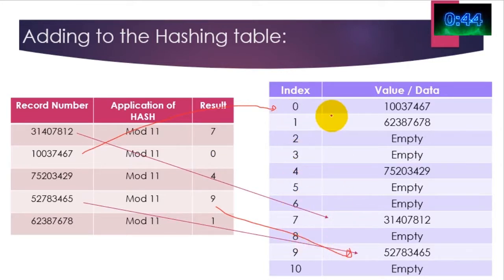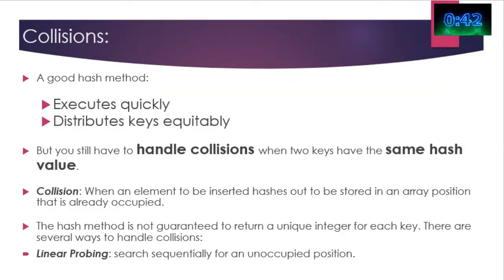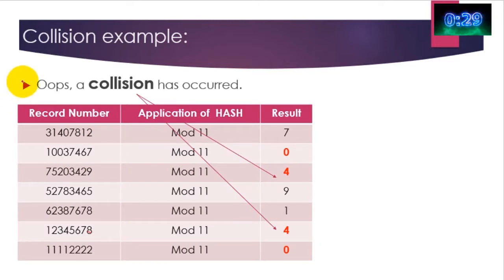Look, collisions do occur and that's not a problem—those are good. The collisions tell you that your hash function is working properly, and of course we need to just handle collisions. We do that by using something called linear probing, and this is how a collision works. So let's have a look at an example.